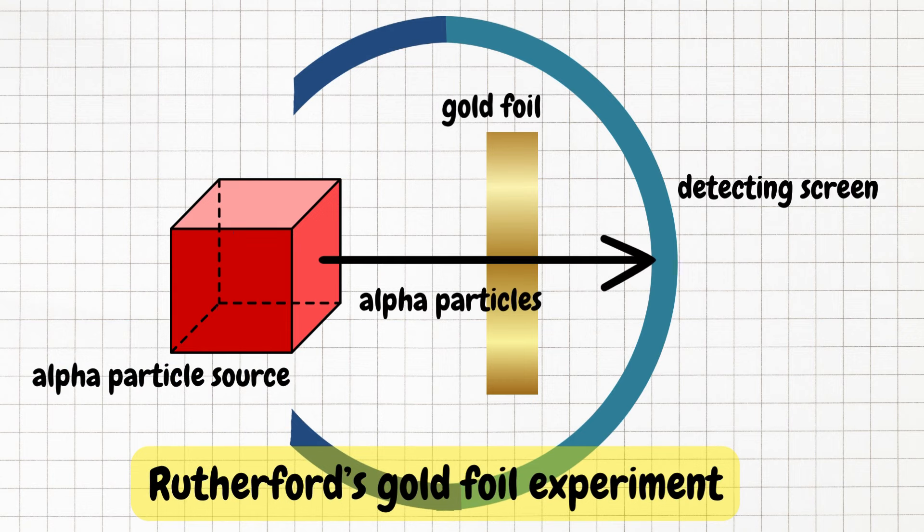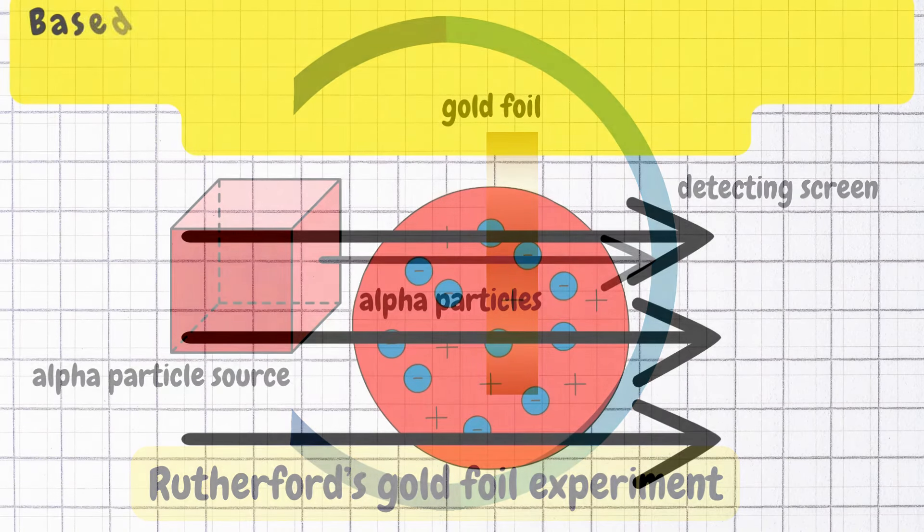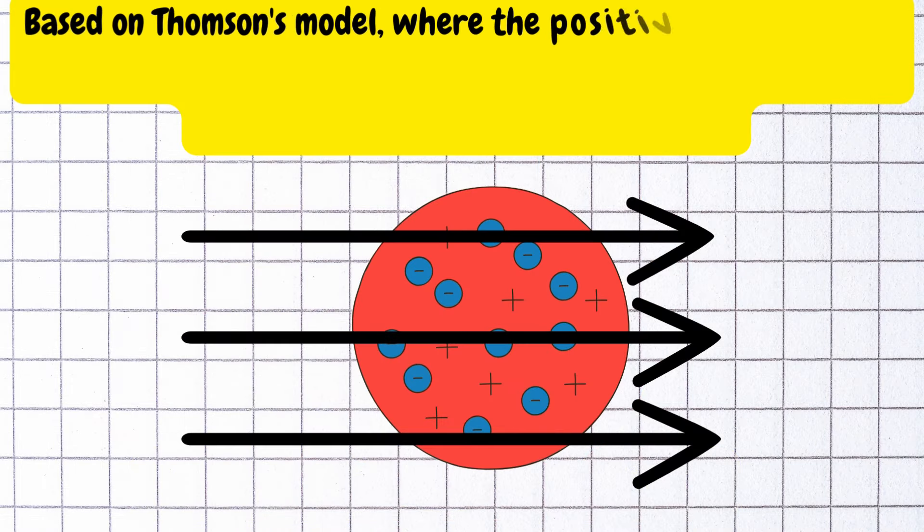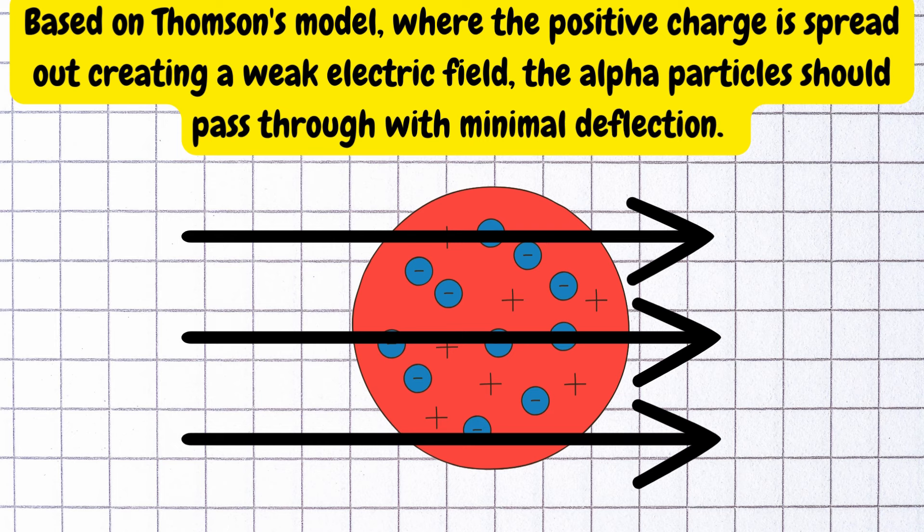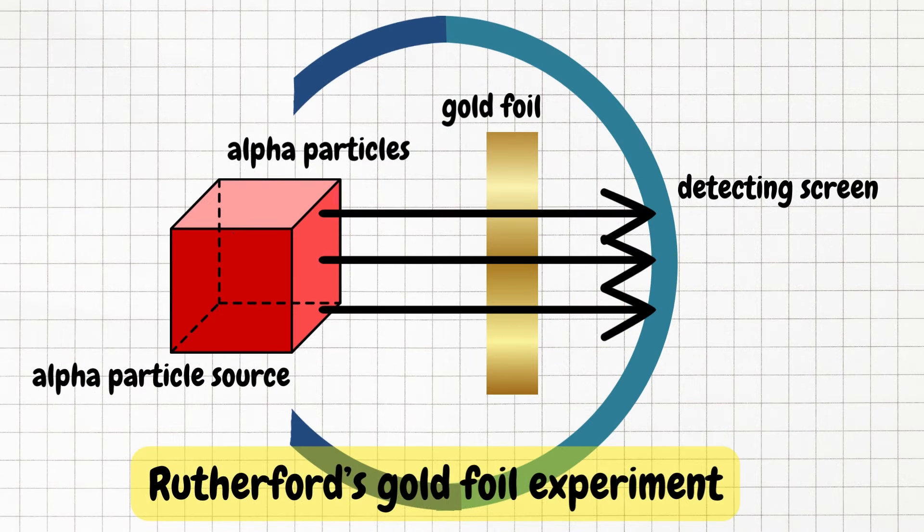The gold foil was bombarded with alpha particles. According to Thompson's model, the positive charges spread out, which means it creates a weak electric field, so the alpha particles should pass through with minimal deflection. However, most alpha particles went straight through, some alpha particles were deflected at large angles, and a few even bounced back.